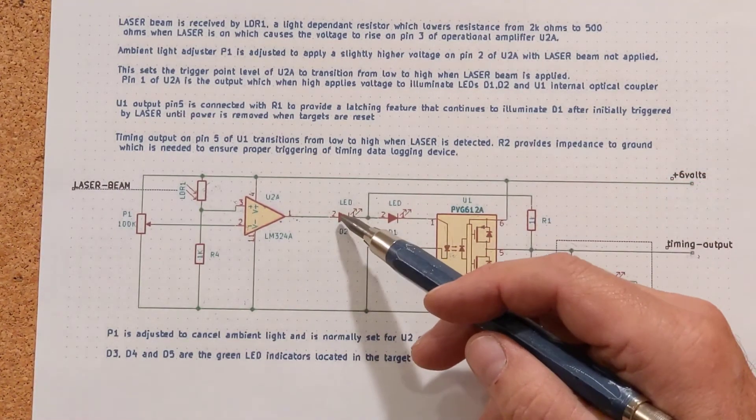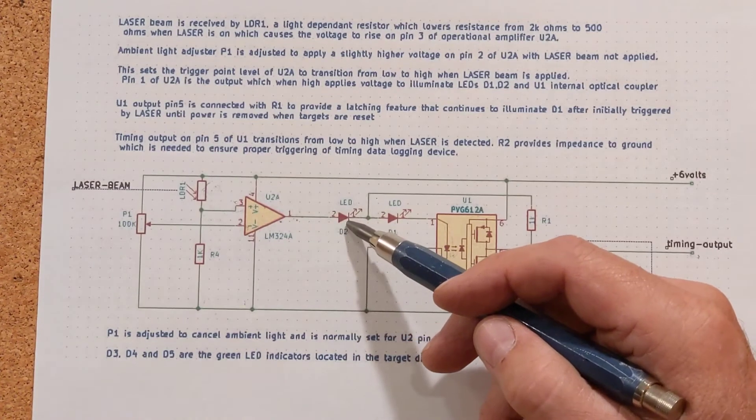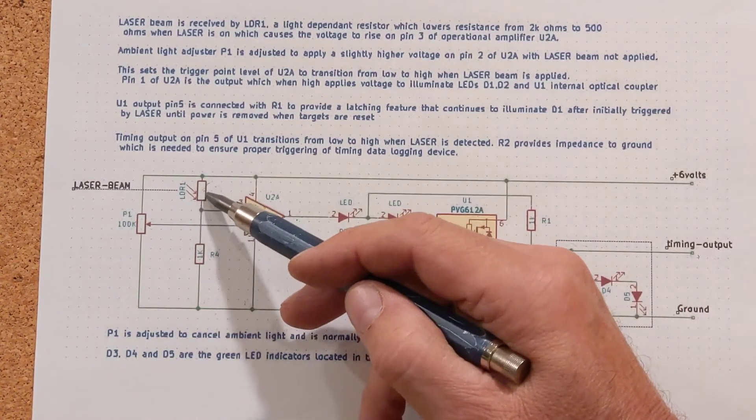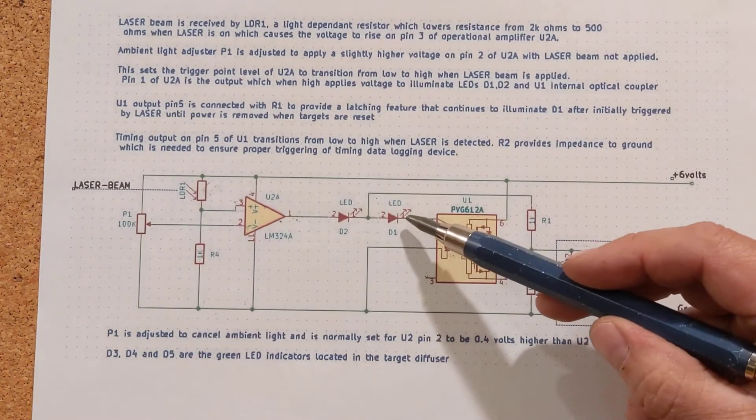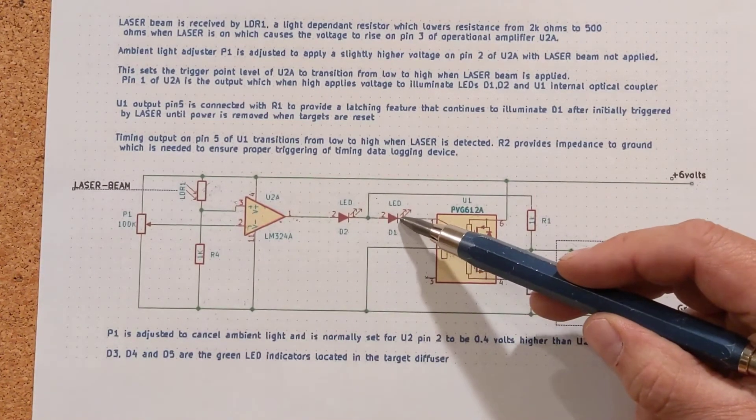It continues to keep those relays or these LEDs conducting and keeps this relay on. Even though this one may turn on and off depending on the status of the sensor, this LED will be on latched.